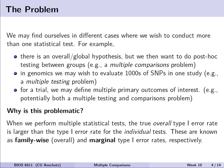We may find ourselves in different cases or scenarios where we wish to conduct more than one statistical test. For example, we may have an overall or global hypothesis, but we then want to do some form of post-hoc testing between groups. This is a common issue in ANOVAs and represents a multiple comparisons problem, the fact that we may want to multiply compare a group to lots of other groups.